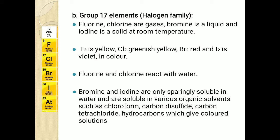If we look at color: fluorine is a pale yellow colored gas, chlorine is a greenish yellow colored gas, bromine is a red colored liquid, and iodine is a violet colored crystalline solid. All of these members are non-metals. Fluorine and chlorine react with water, meaning they are soluble in water, but bromine and iodine are only sparingly soluble in water.